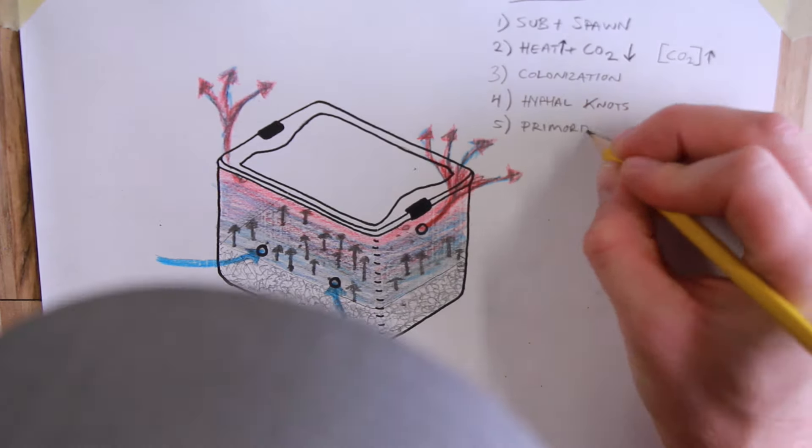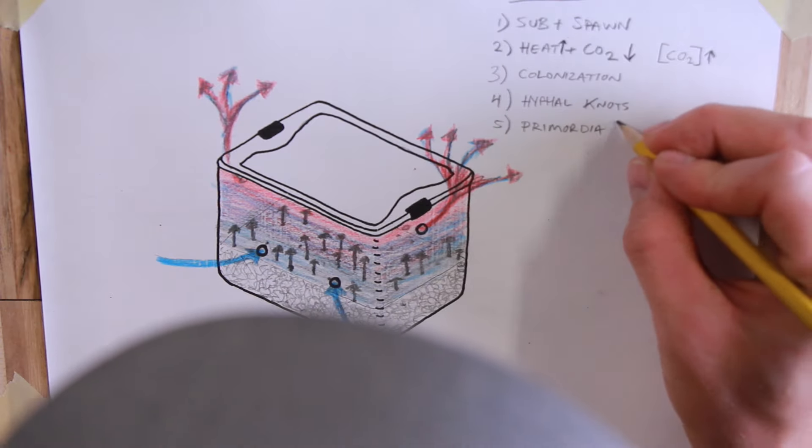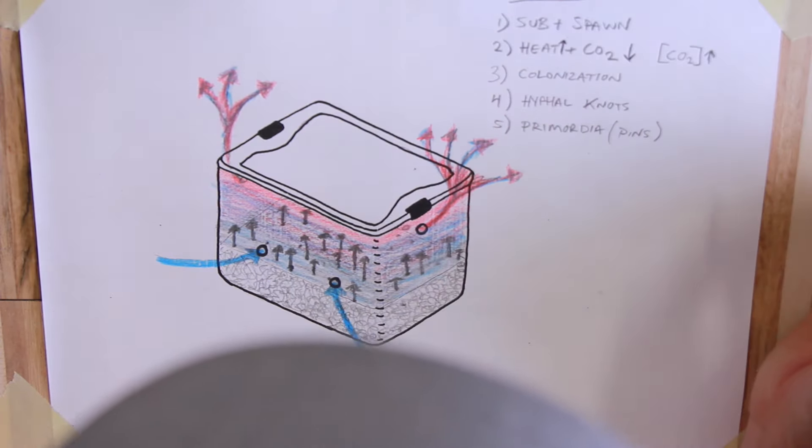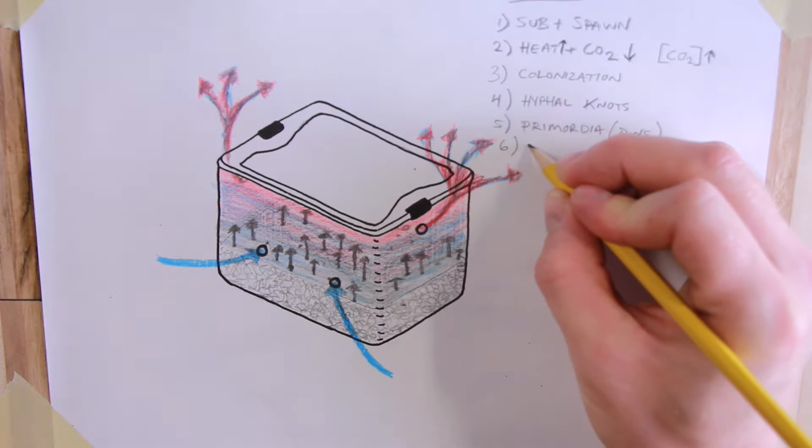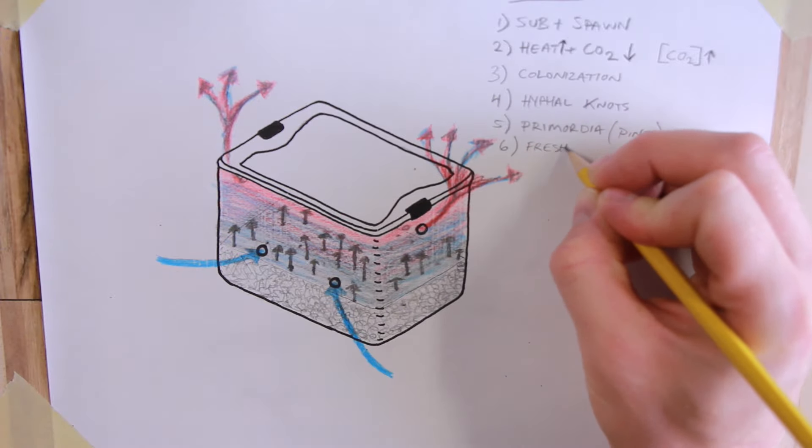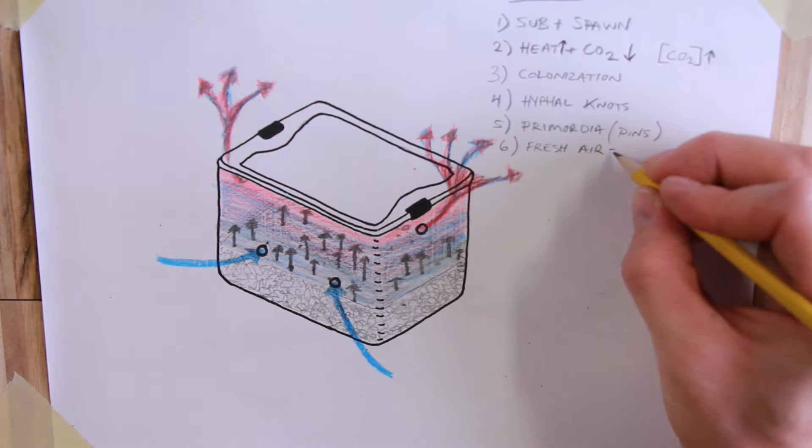Our substrate becomes fully colonized and then hyphal knots begin to form. The hyphal knots morph into primordia, also known as pins.